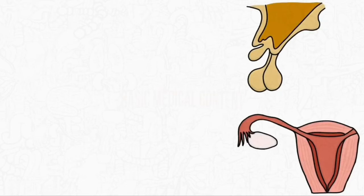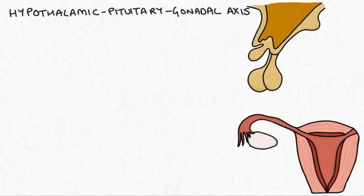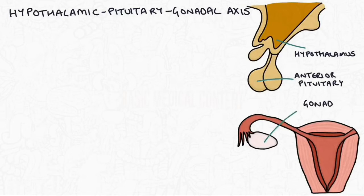To understand how these medications work you need to have a basic understanding of the hypothalamic pituitary gonadal axis in the male and female bodies. So here we have a basic diagram showing the hypothalamus, the anterior pituitary gland and then the gonads, in this case the ovaries.